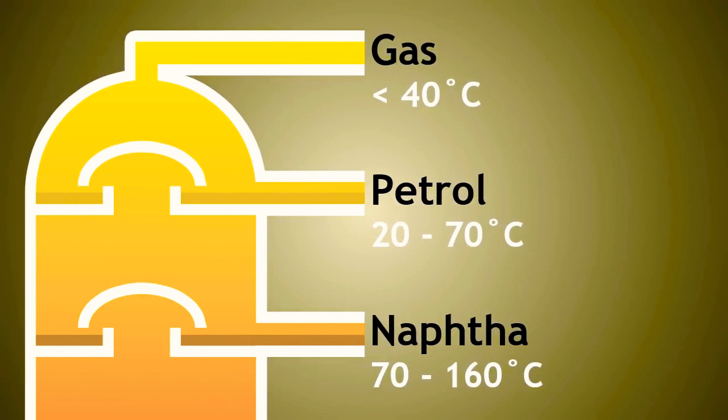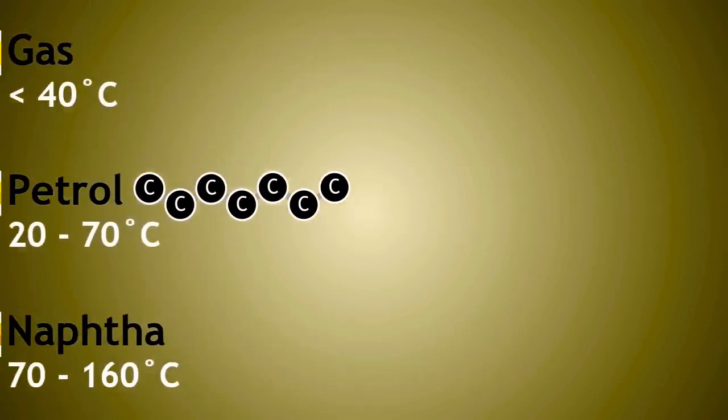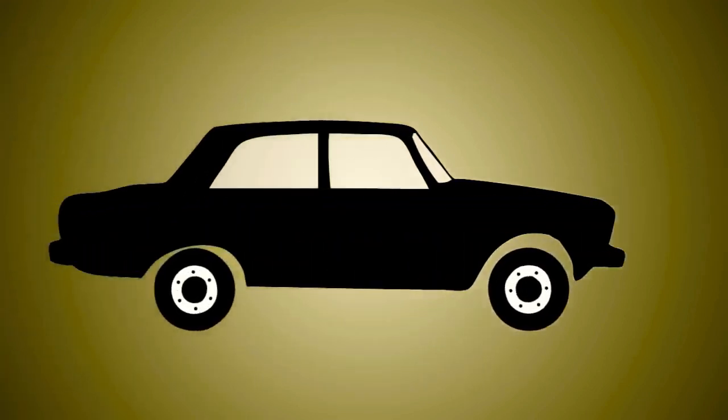Petrol is between five to seven carbons in length. It is still a fraction of small chain hydrocarbons and therefore these vaporize at a low temperature and are easily ignited. This makes it useful as a fuel in the internal combustion engine of a car or other vehicles.